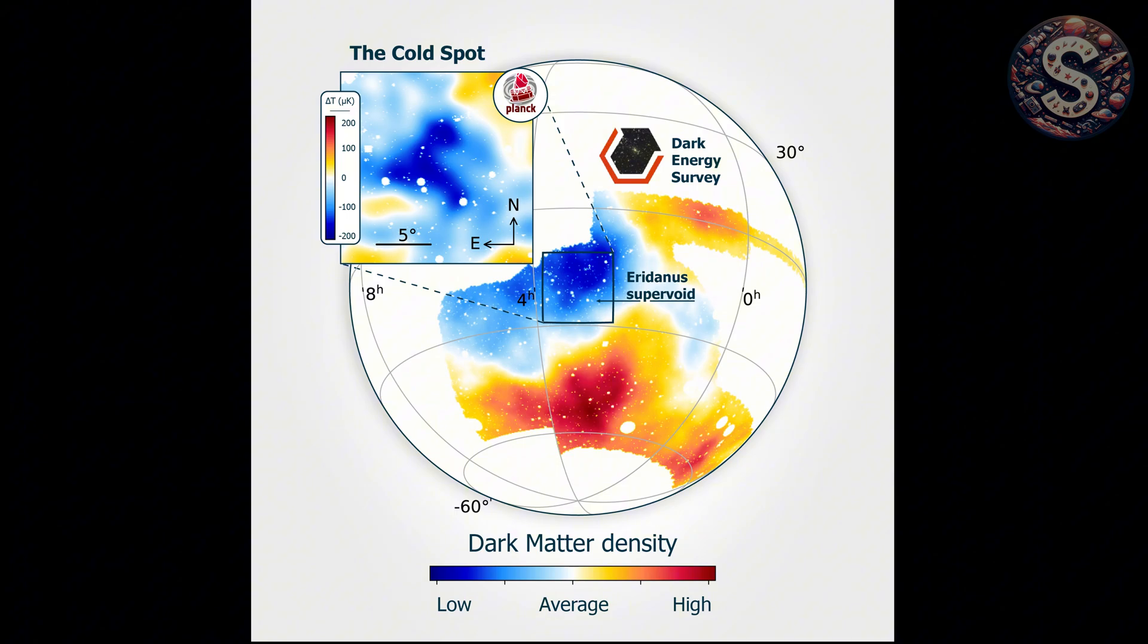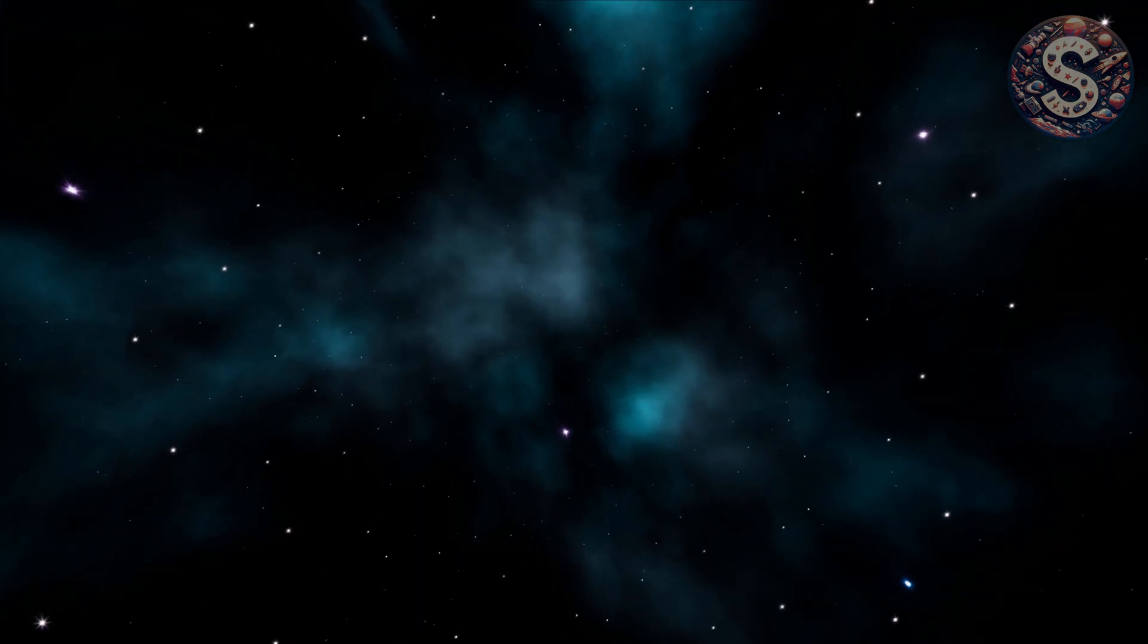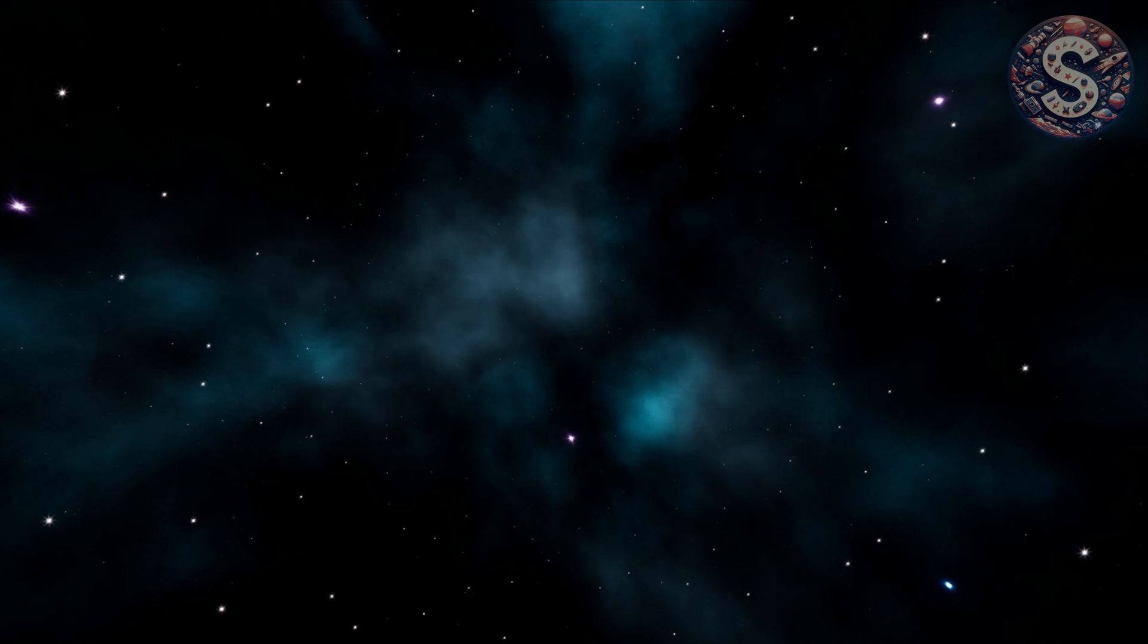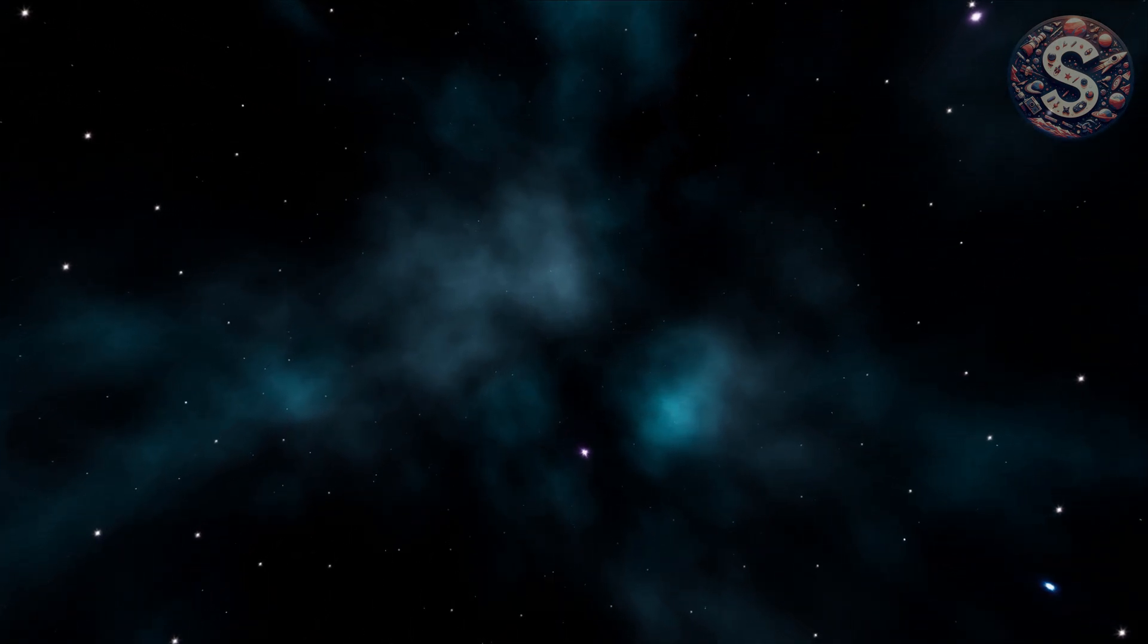Let's start with the CMB cold spot. That's the cosmic microwave background, the afterglow of the Big Bang, and it's supposed to be relatively uniform. Tiny fluctuations? Sure. But in 2004, astronomers found a massive cold region in the southern hemisphere of the CMB. Too big. Too cold. Too statistically unlikely to ignore. Some scientists think it's a fluke. Others say it could be the scar of a collision with another universe. Like two bubbles bumping into each other in the early moments of the cosmic inflation.